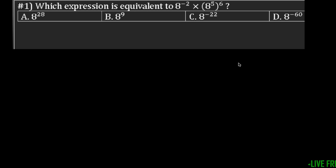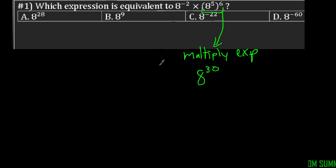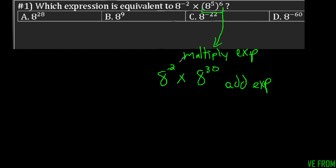For the first problem, it says which expression is equivalent to eight to the negative two power times eight to the fifth power, all to the sixth power. Take it one part at a time. For the inner part, I'm going to multiply exponents, giving eight to the 30. Then I bring down eight to the negative two times eight to the 30, and I add those exponents — negative two plus 30 — and I get eight to the 28, which is going to be that first choice.